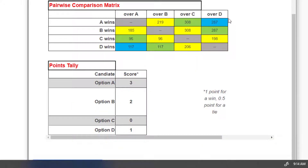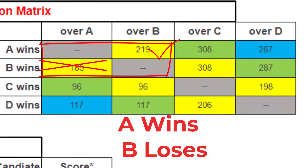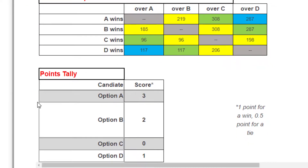Based on this pairwise comparison matrix, the calculator has determined that option A should have three points, option B two points, option C zero points, and option D one point. This is based on one point for every head-to-head win — comparing candidates pair by pair, every time a candidate wins over another they get a point, or if they tie they get half a point. In this case, option A is the winner.